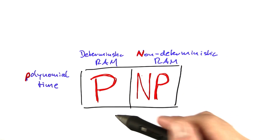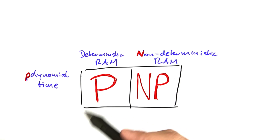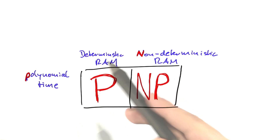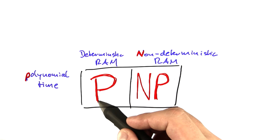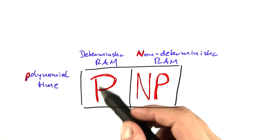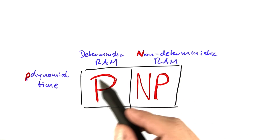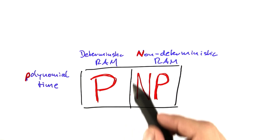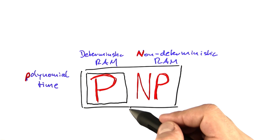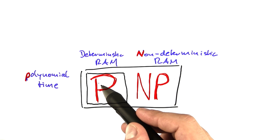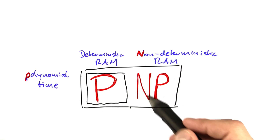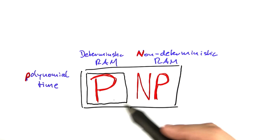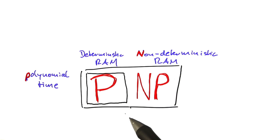It would have been more consistent to call this one DP or something like that, but this is the way we name it. We also know that any problem solvable in polynomial time on a deterministic RAM can also be solved in polynomial time on a non-deterministic RAM. We should redraw those lines here, because any problem contained in P is automatically also contained in NP — but not vice versa. Otherwise, we would know there's a polynomial time algorithm for vertex cover and the two other problems.